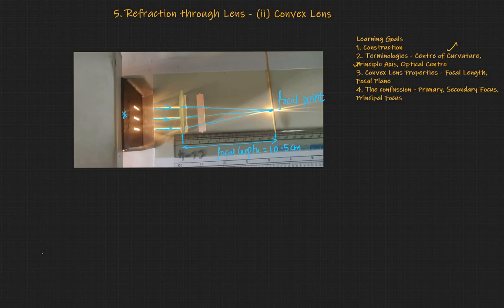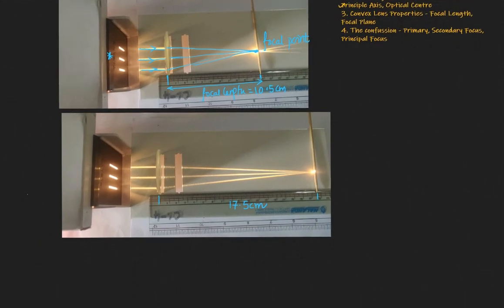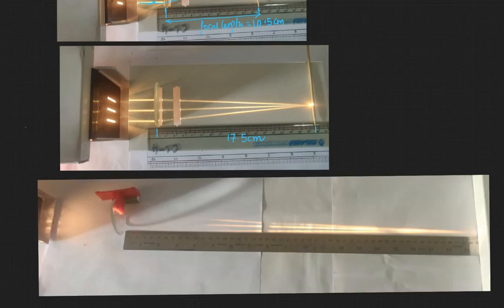Now let's look at another convex lens. In this lens, the focal length is approximately 17.5 centimeters. And here is another lens with a greater focal length — the focal length is approximately 50 centimeters.